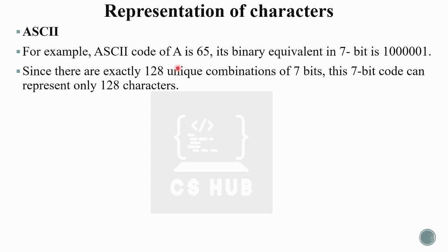Since there are exactly 128 unique combinations of seven bits — 2 raised to 7 equals 128 — this seven-bit code can represent only 128 characters. But our keyboard has more than 128 characters: alphabets have both small and capital letters, plus many special keys and numeric keys. So 128 characters is not enough to represent all the characters.